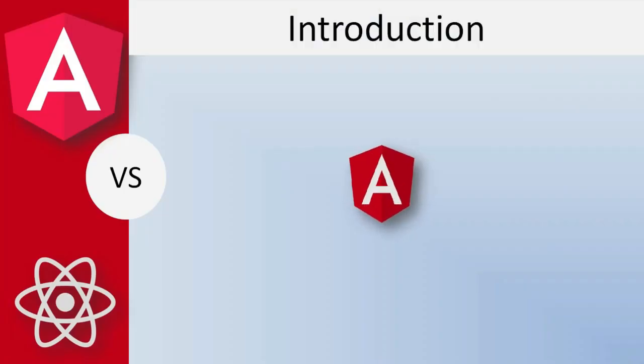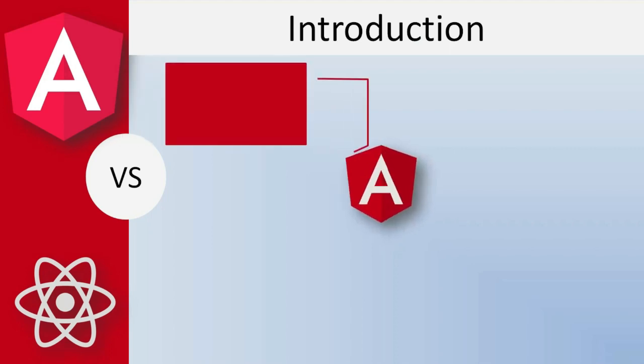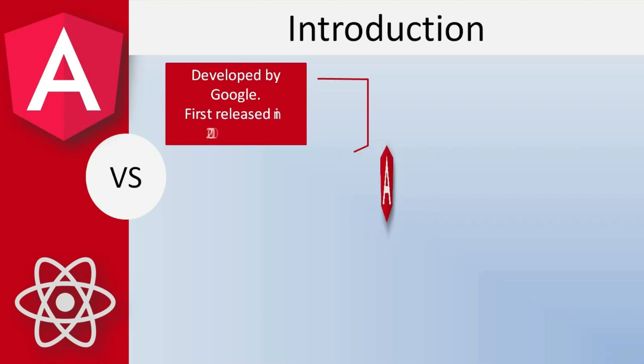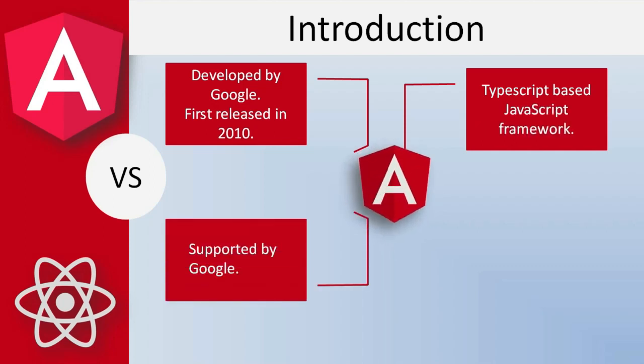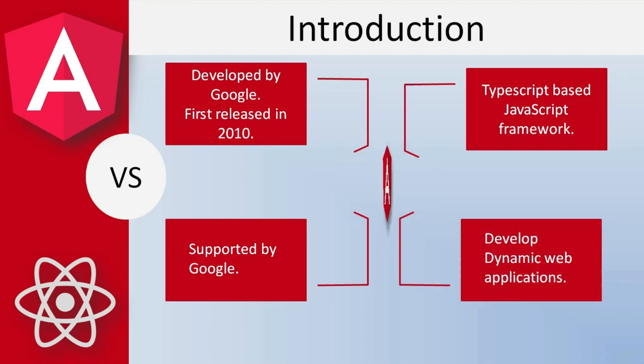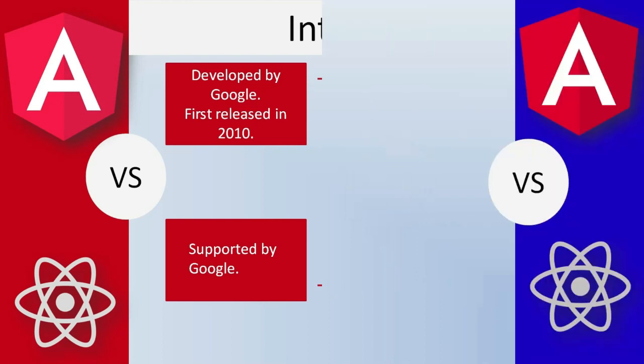Angular is developed by Google and was first released in 2010. It is a TypeScript-based JavaScript framework. The latest stable version is Angular 9 which was released on 7 Feb 2020. Since Angular is originally created by Google, it is actively supported by Google developers and individual community of developers as well. It is a fully-featured JavaScript framework which helps to develop dynamic web applications.